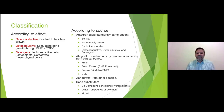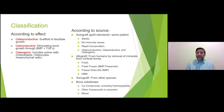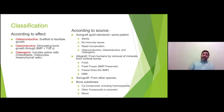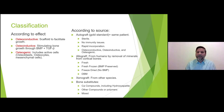Autograft is the gold standard because it is the closest to achieving all previously mentioned points. It is sterile, there are no immunity issues, no infection risk, it incorporates rapidly, it has proteins, a three-dimensional shape, and cells. In an ideal world, this is what you should be using.